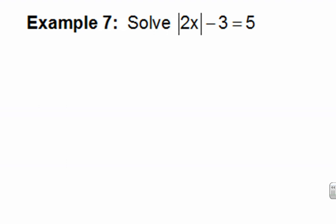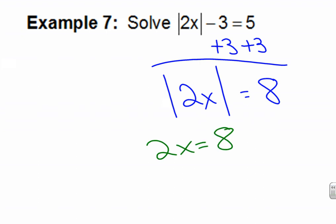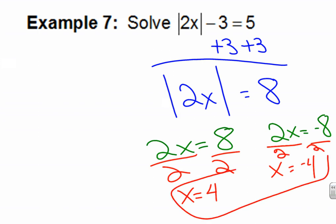Pause the video now as you try example seven. Press play to go over your answer. Add 3. The absolute value of 2X equals 8 — we have not written it twice yet; 3 was on the outside. Now it looks so nice, I write it twice: once with the positive answer and once with the negative answer. I divide both sides by 2: X equals 4 and X equals negative 4. Final answer for example seven.